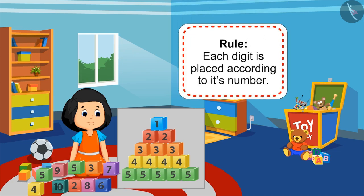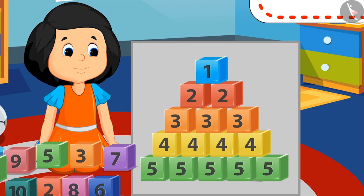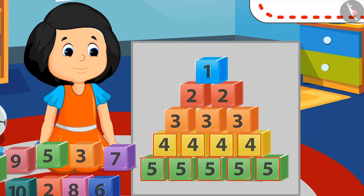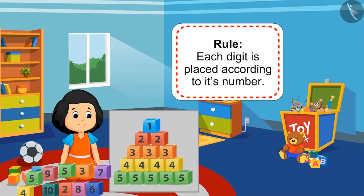Yes, each digit is placed according to its number. One for one time, two for two times, and three for three times. And this is how this pattern has been carried forward. Come kids, let's look at some more examples of number patterns.